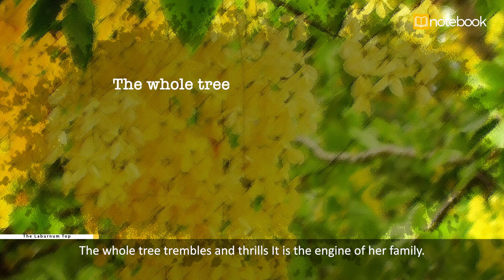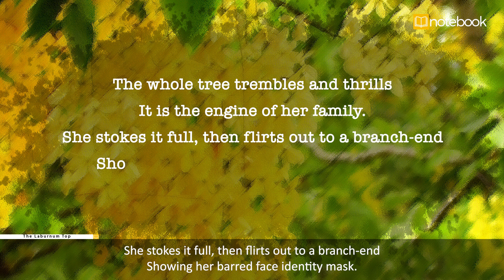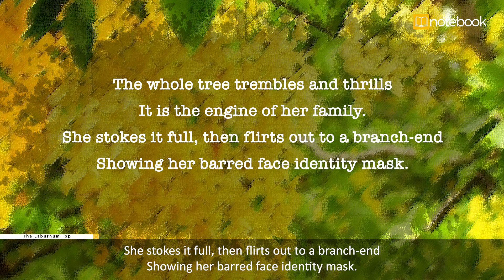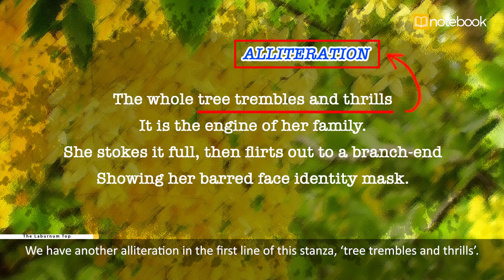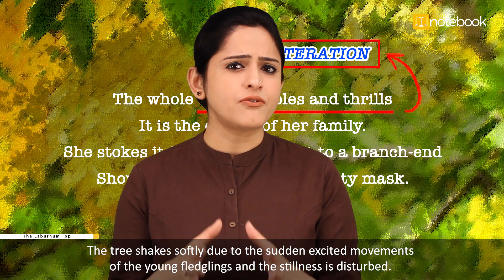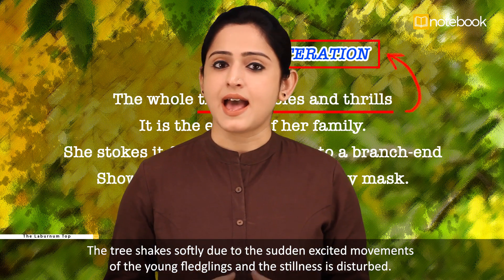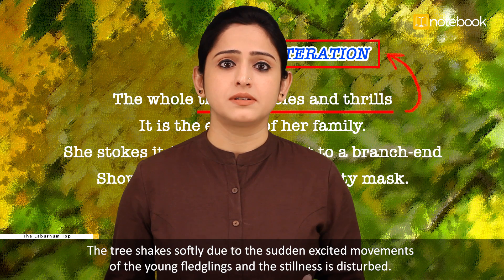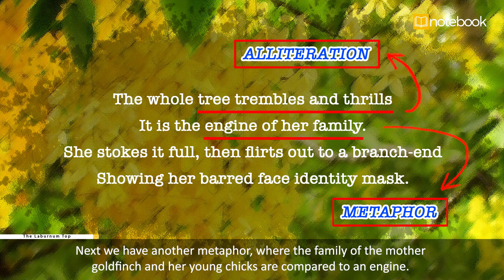'The whole tree trembles and thrills. It is the engine of her family. She stokes it full, then floods out to a branch end, showing her bead face, her identity mask.' We have another alliteration in the first line of the stanza: 'tree trembles and thrills.' The tree shakes softly due to the sudden excited movements of the young fledglings, and the stillness is disturbed. We also have another metaphor where the family of the mother goldfinch and young chicks are compared to an engine.